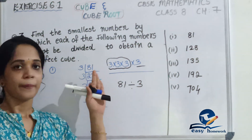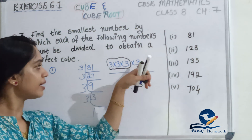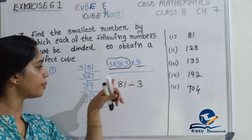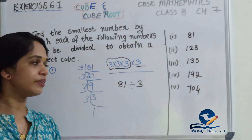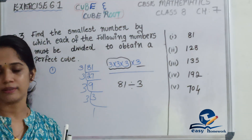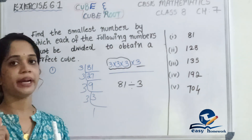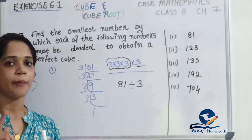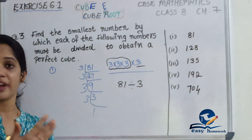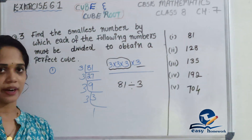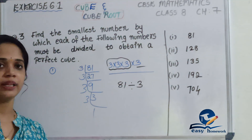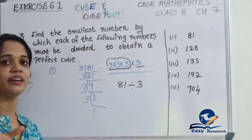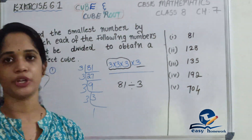We have one complete triplet of 3s, and one extra 3 left over. To form a perfect cube, we must divide this number by the extra 3. So 81 divided by 3 gives a perfect cube. Is it clear?